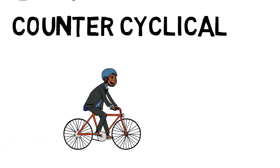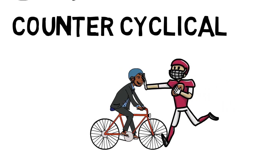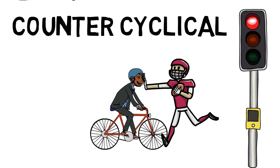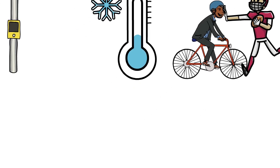Economists argue fiscal policy should counter the business cycle. This means that when the economy is overheating, the government should reduce spending and increase tax rates; or if it's in recession, increase spending and reduce tax rates. This would counter the business cycle — cooling down the economy if it's overheating, or stimulating it if it's not growing at a fast enough level.